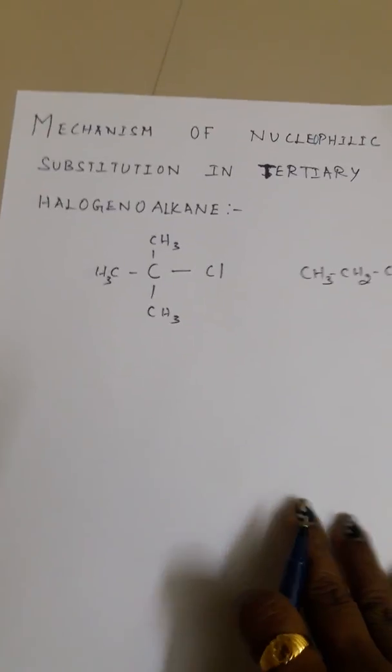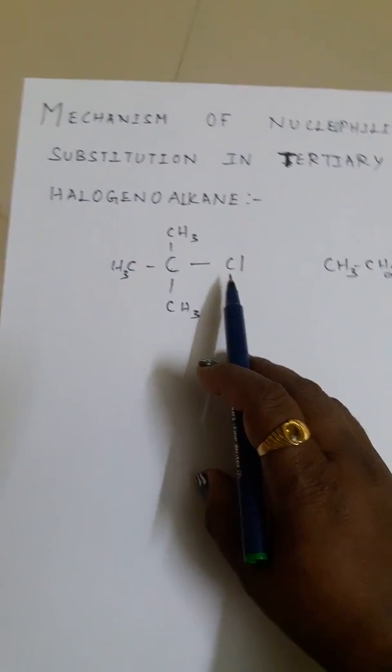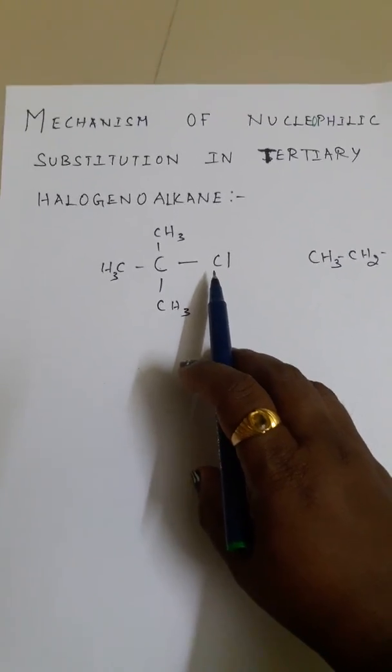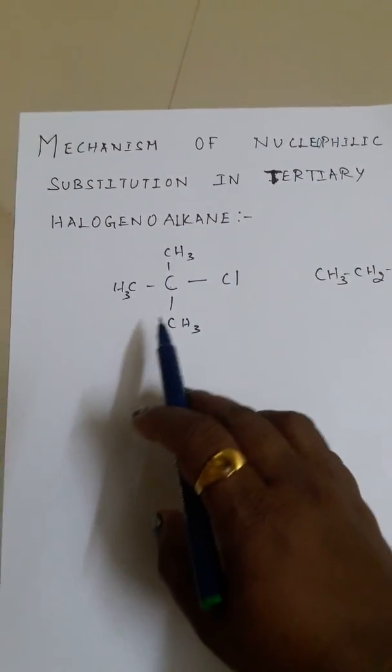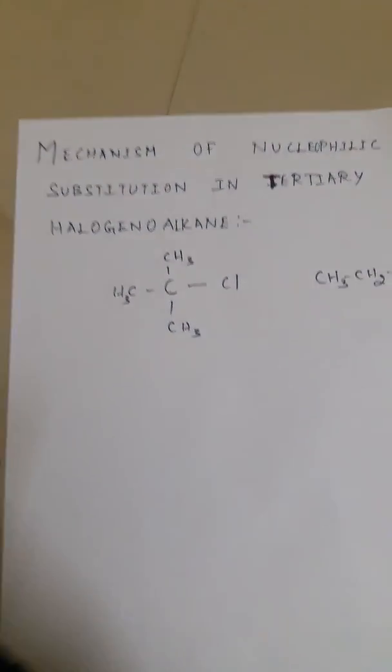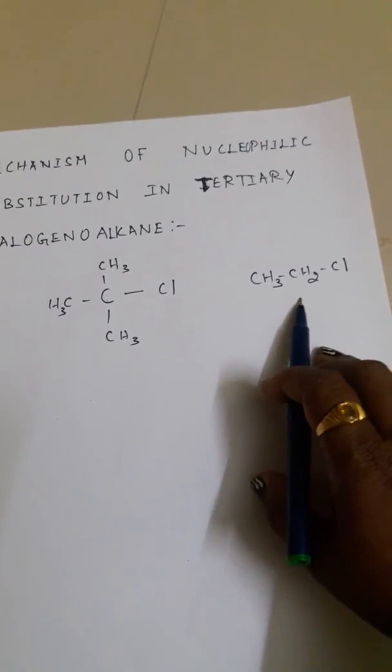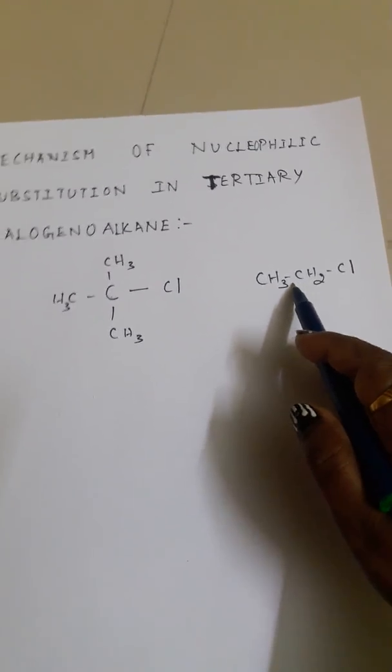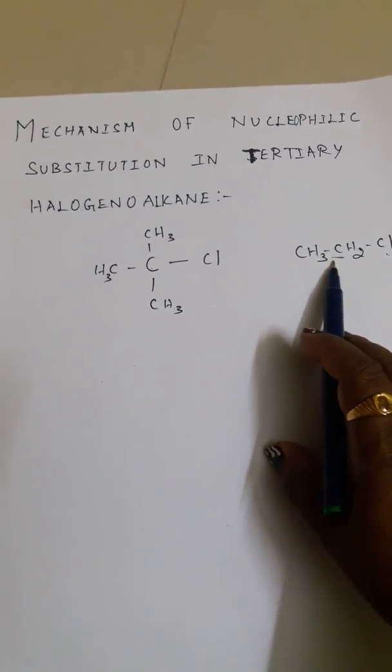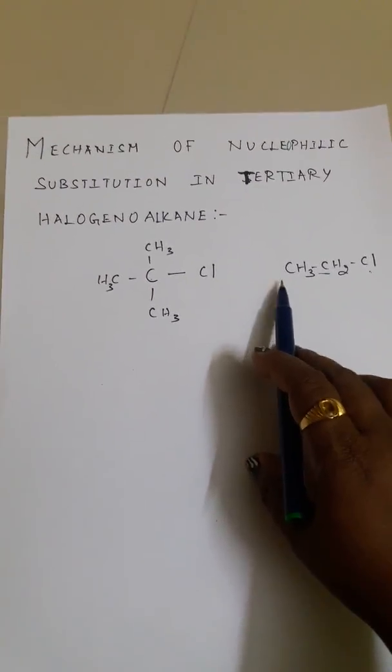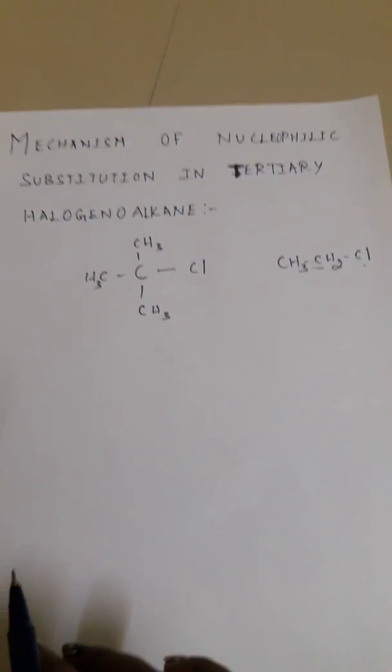Tertiary means a carbon atom bonded with chlorine or any halogen is also bonded with three other alkyl groups or three other carbon atoms. In contrast, primary means a carbon bonded with a halogen is also bonded with only one other carbon atom or alkyl group.